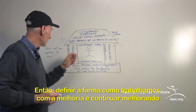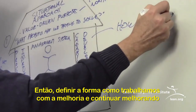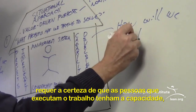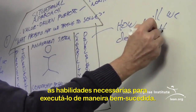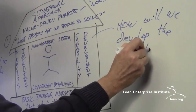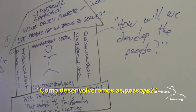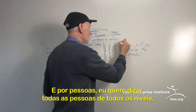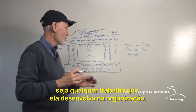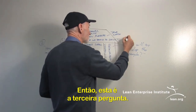Once we've defined how work will improve and want it to continually improve, that requires making sure that the people who do the work have the necessary capabilities and skills to do that successfully. So question three is: how will we develop the people? And by 'the people' I mean people at all levels who are doing whatever work they do throughout the organization.